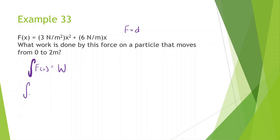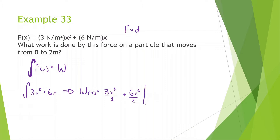The integral of 3x squared plus 6x with respect to position gives us the work function: 3x cubed divided by 3 plus 6x squared divided by 2, with limits from 0 to 2. Since 0 is just 0, we plug in 2 and we get 20 joules.